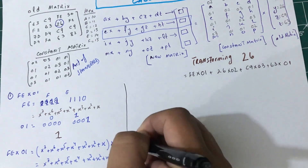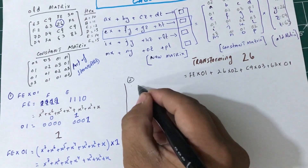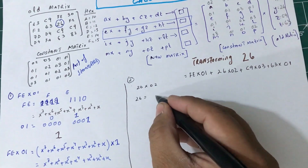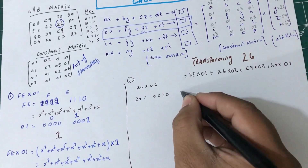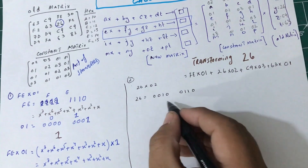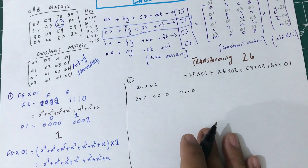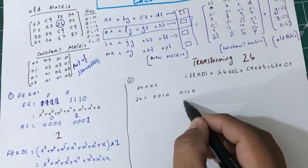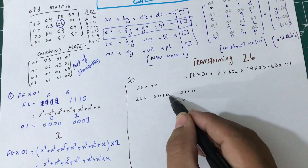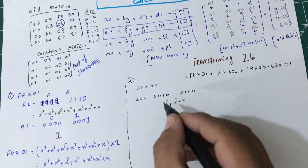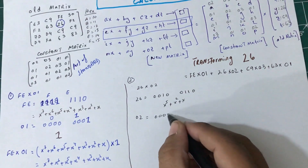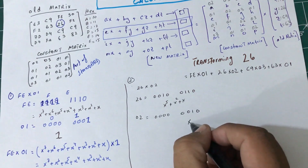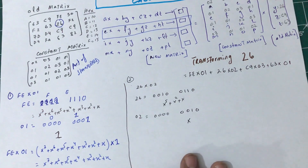Now step 2: 26 multiplied by 02. So 26 in binary: 2 is 0010, 6 is 0110. In polynomial form that is x⁵ + x² + x. And 02 in hex is 0000 0010, so x¹ which is just x.